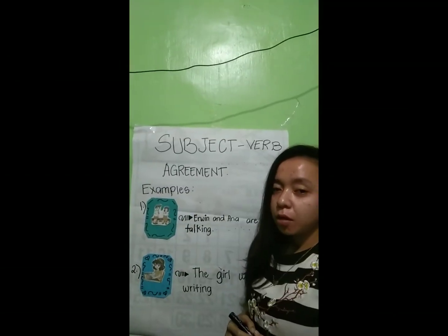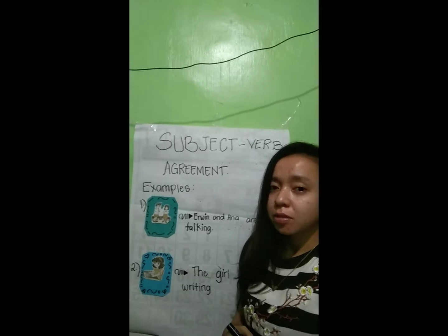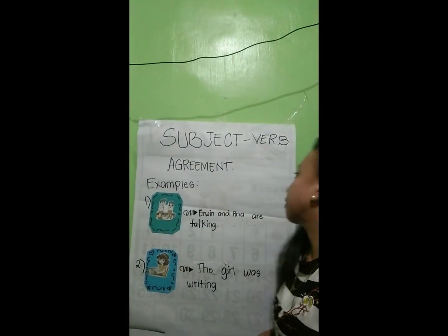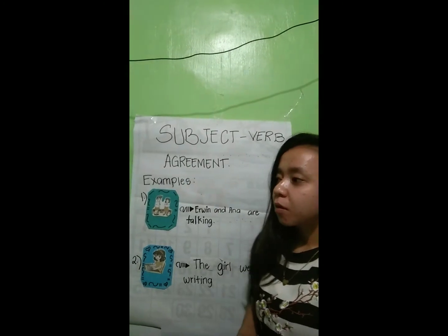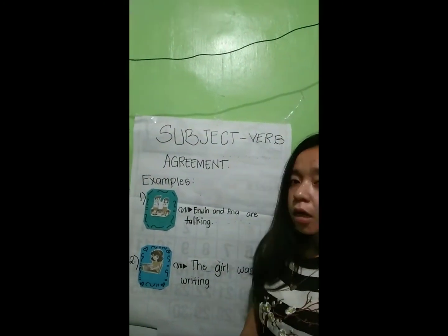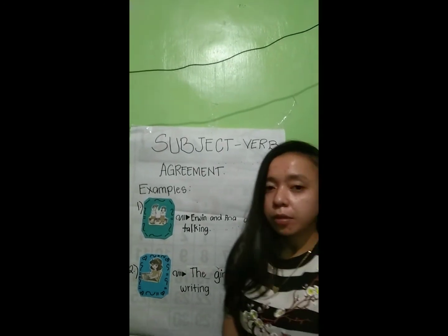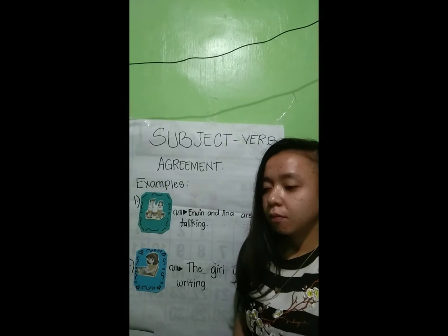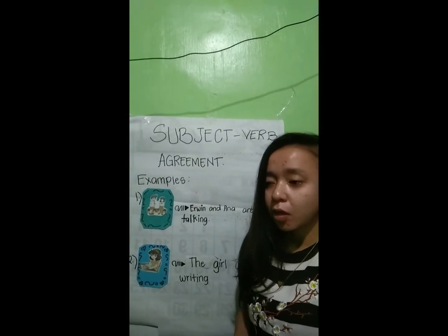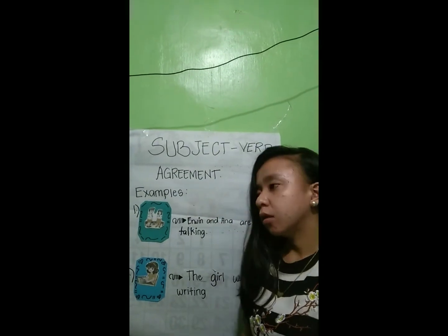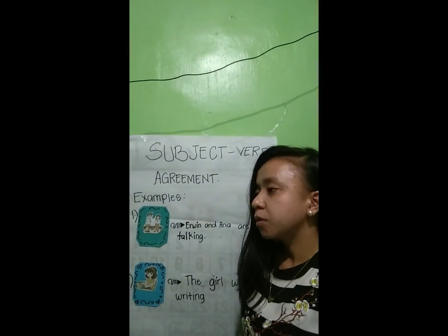Good day class. For today we are going to discuss subject-verb agreement. What do we mean by subject-verb agreement? The subject and verb must agree with one another in number. So if the subject is singular, the verb must be singular too. And if the subject is plural, the verb must be plural also.